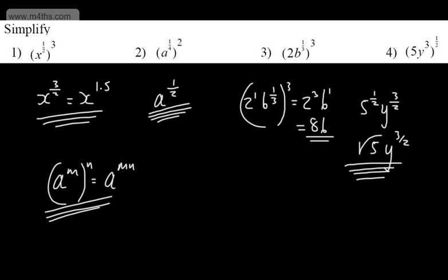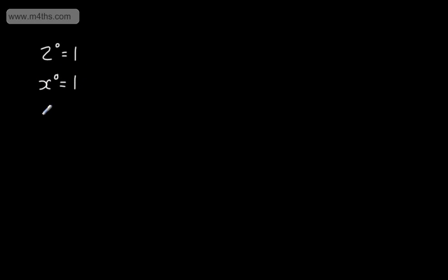We're now going to look at the zero power. When we have anything to the power of 0 — so 2 to the 0, this is 1. x to the 0 is 1. 5p all to the power of 0 is 1. Let's look at how this works.